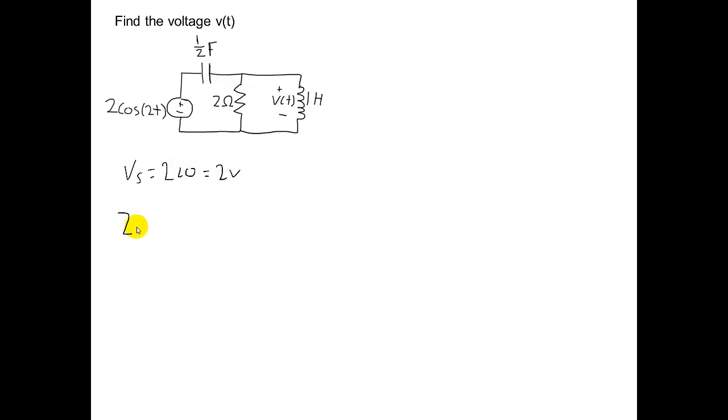The impedance of the inductor can be found using the equation Z equals J omega L. Frequency omega can be found by looking at the voltage source. Here we can see that it's 2. The inductance is 1 Henry, which gives us an impedance of J2 ohms.